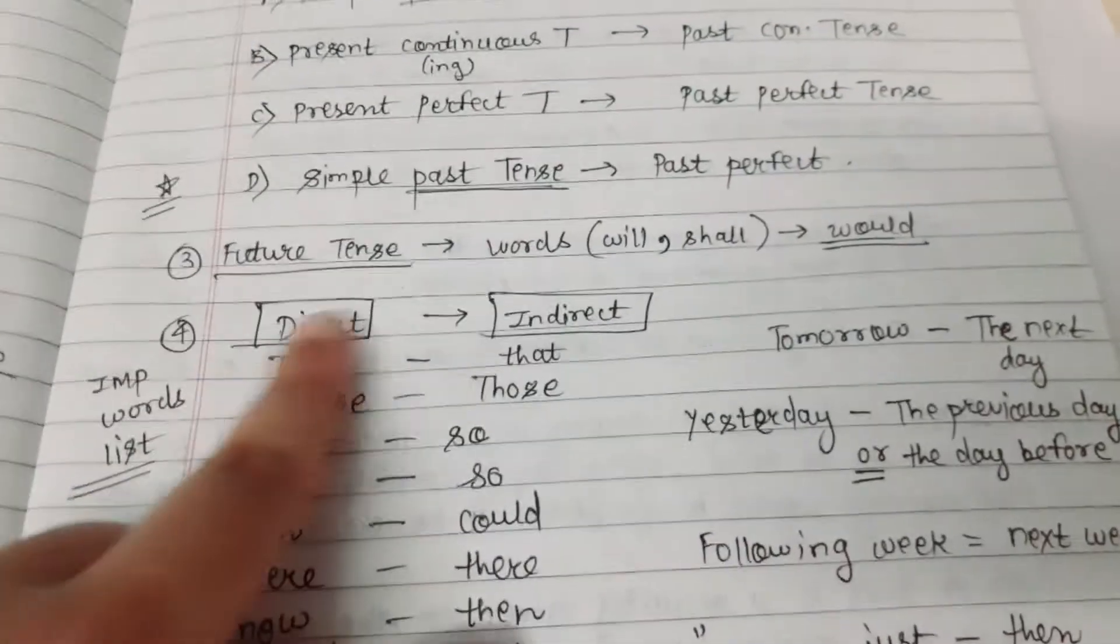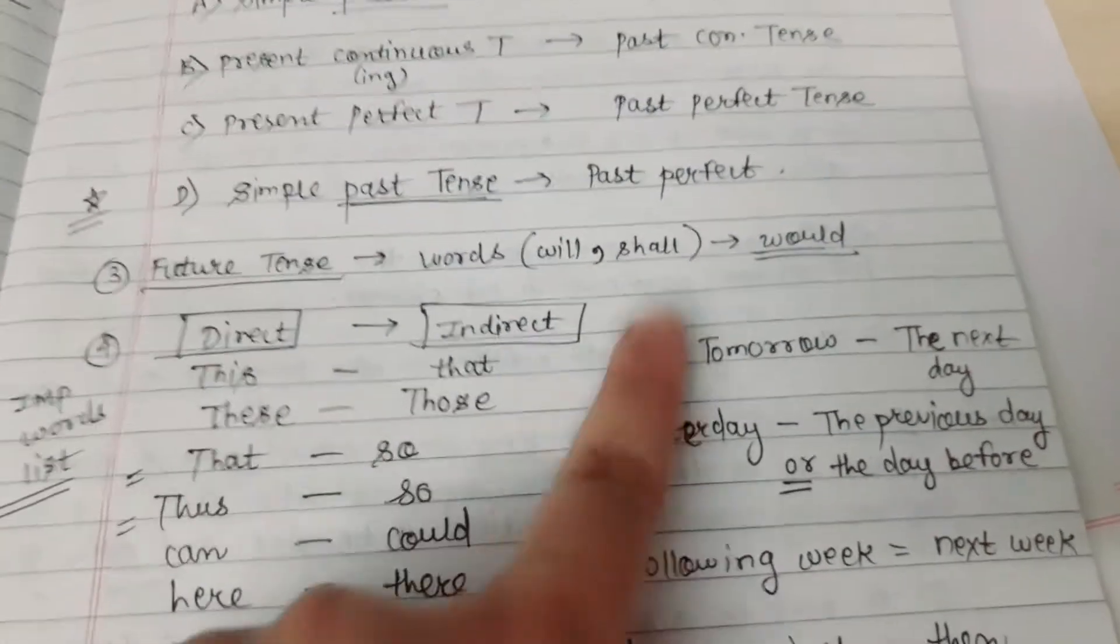Rule 3: For future tense, the words 'will' and 'shall' will become 'would'.